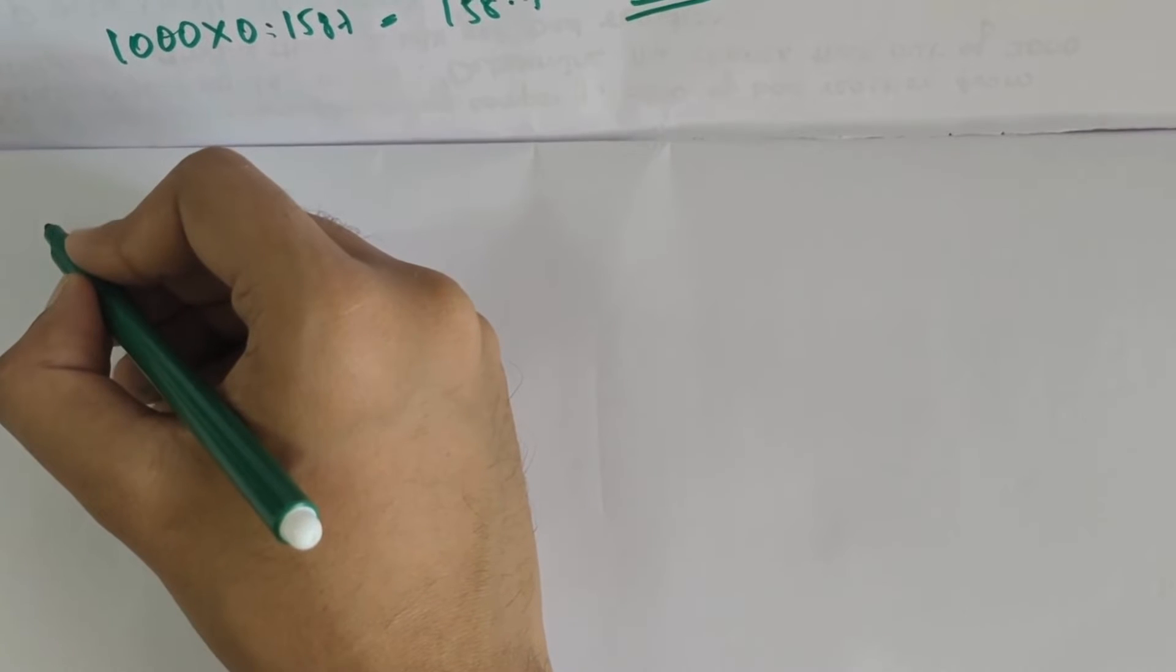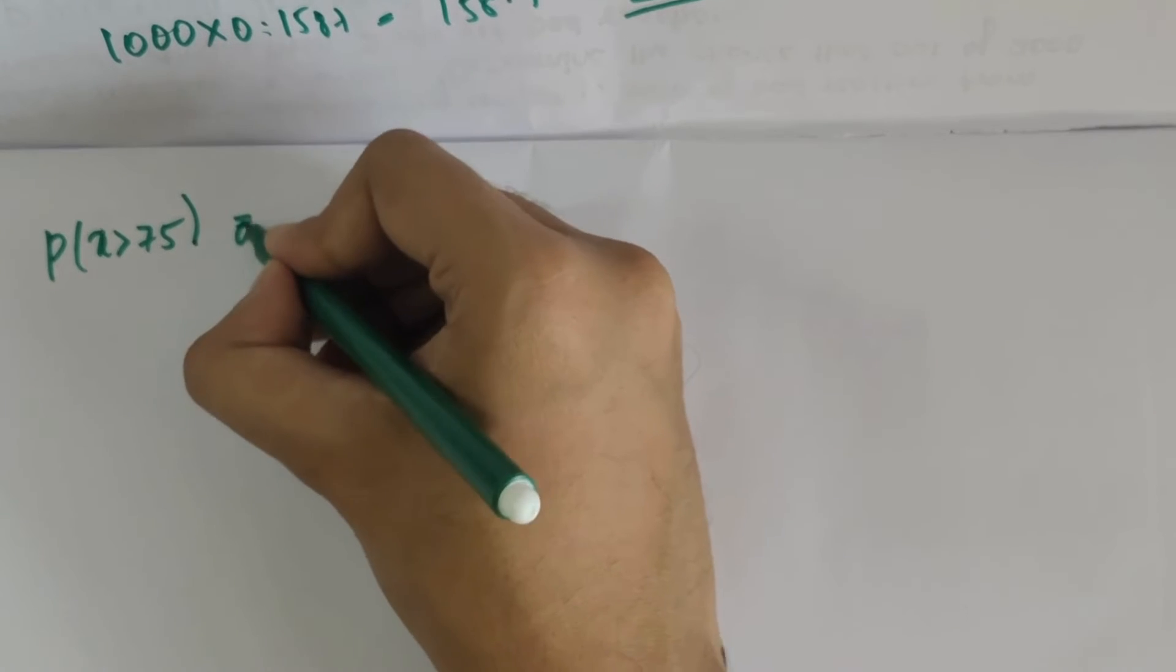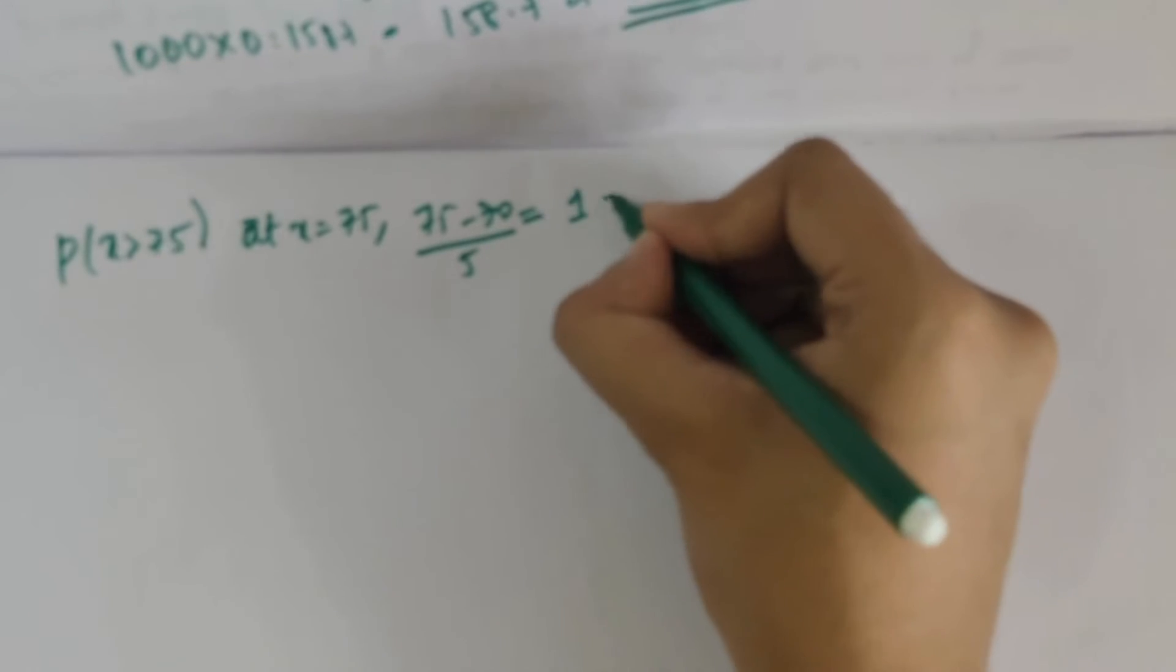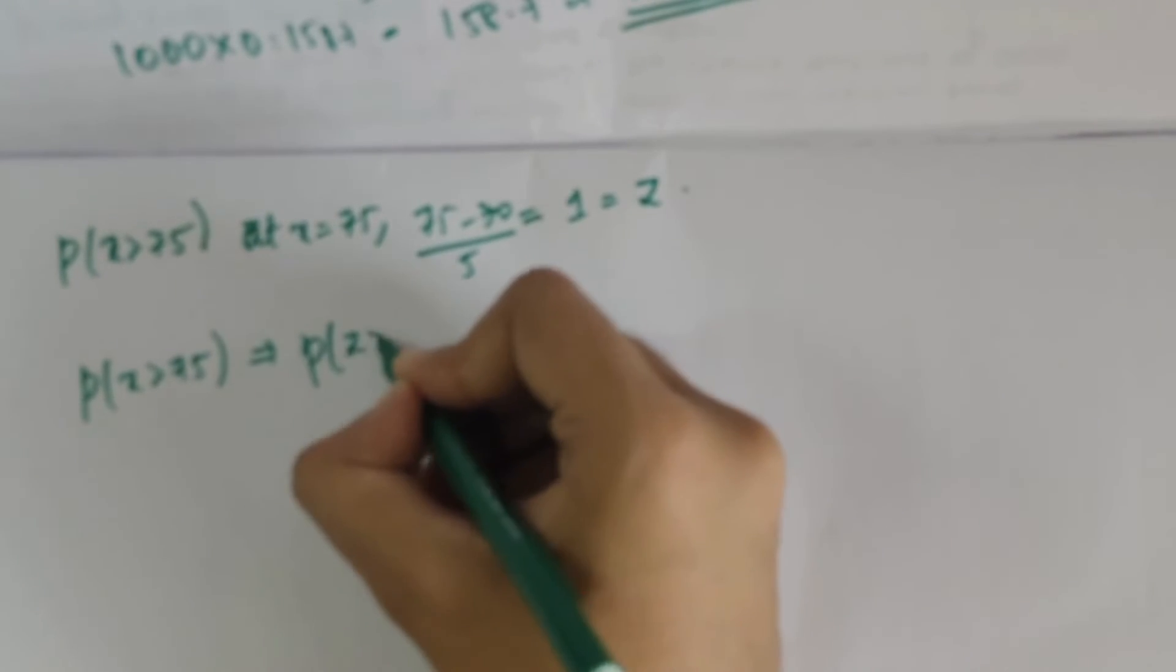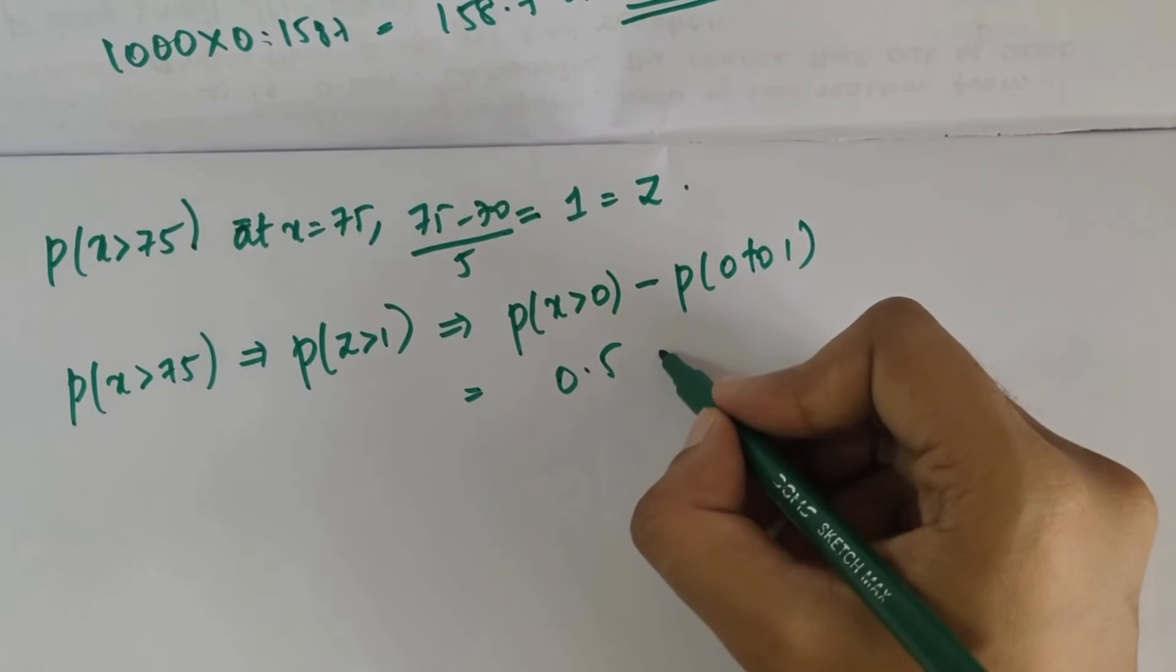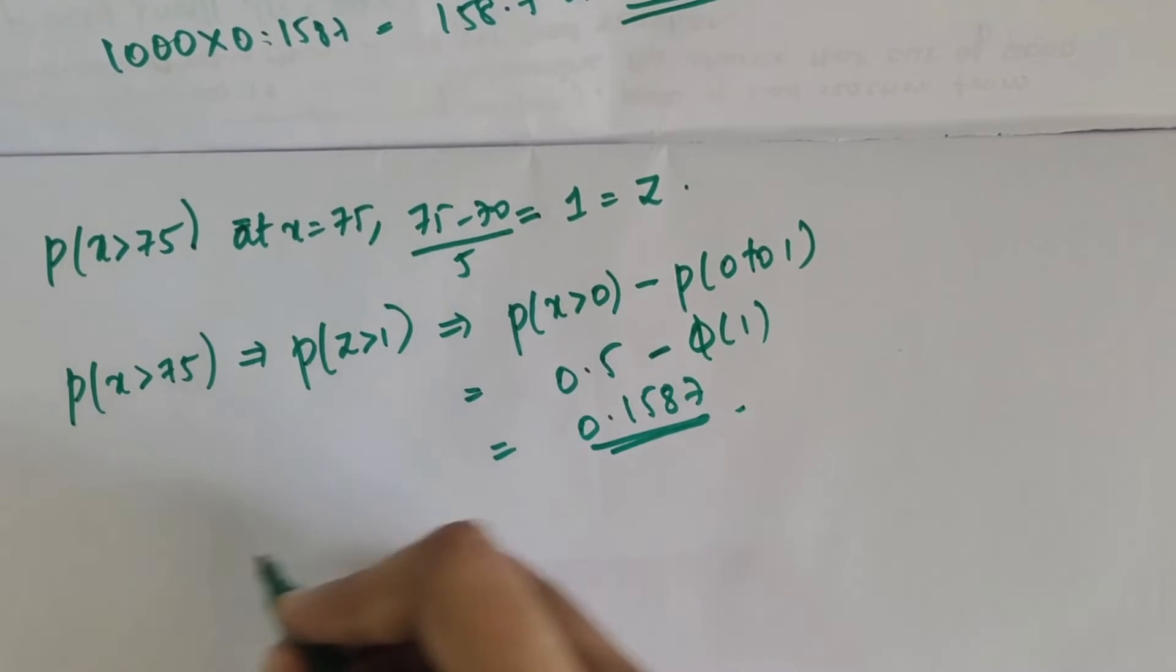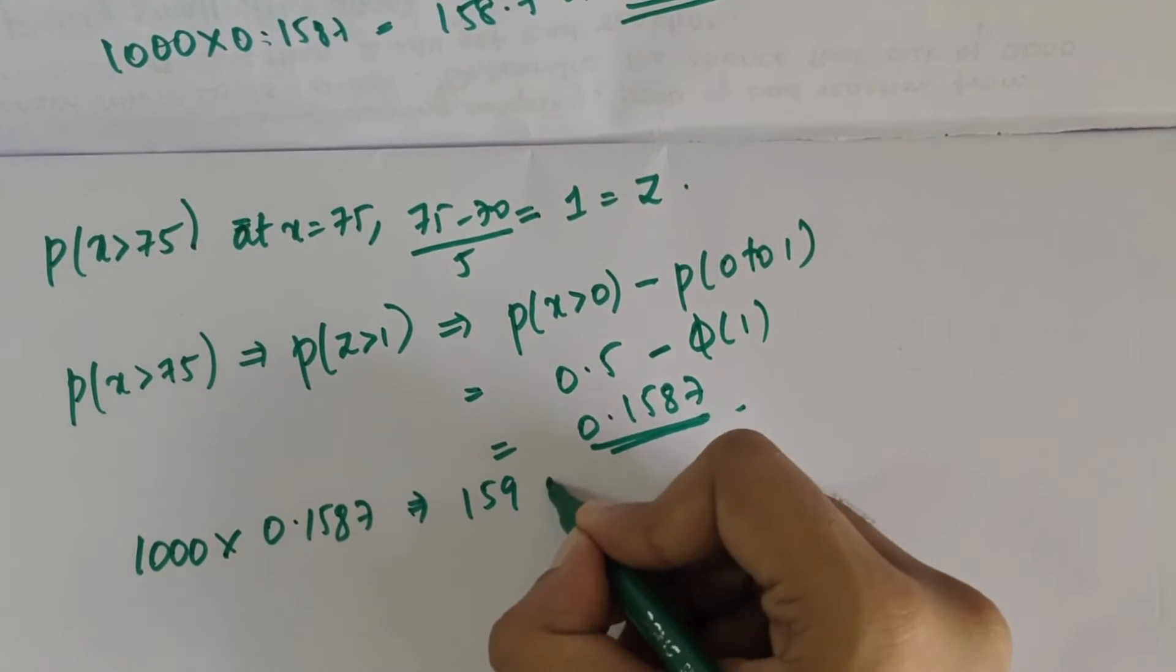Now for more than 75: P(x > 75). At x = 75, z = (75 - 70) / 5 = 1. So P(x > 75) can be written as P(z > 1), or P(x > 0) minus P(0 to 1). This is 0.5 minus 0.3413, which equals 0.1587. For 1000 students, this is 1000 × 0.1587 = 159 students.